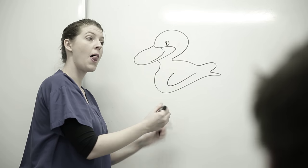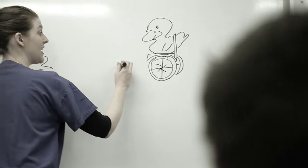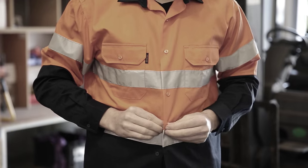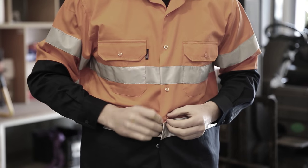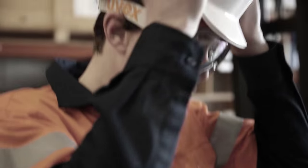Administrative controls — change work practices or implement more training. And of course, make sure personal protective equipment is worn when required.